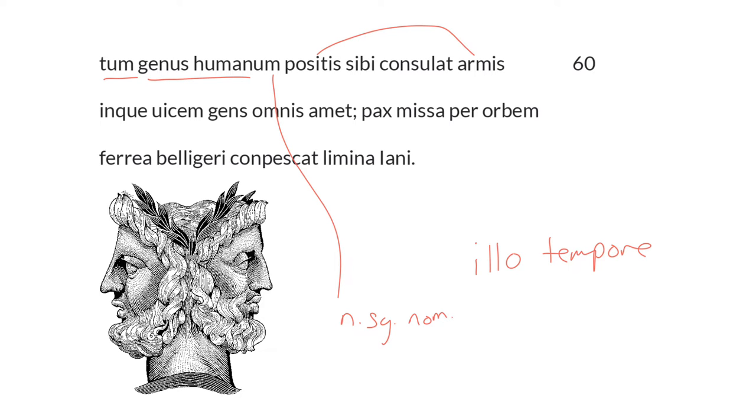when arms have been laid aside, when weapons have been put aside. I'm taking positis armis as a neuter plural ablative absolute. Let the human race, sibi consulat, let it have concern for itself, take care of itself. Consulat is the third singular present subjunctive, from the third conjugation verb consulo consulare, present subjunctive active. It always goes with the dative case. So this is a neuter singular dative, because the subject of consulat is genus, and this is a reflexive pronoun. Then let the human race have concern for itself when weapons have been set aside.